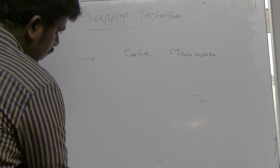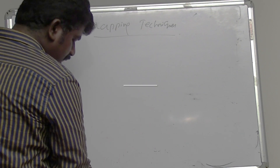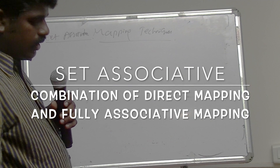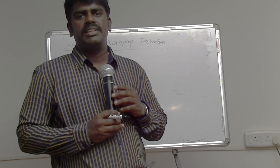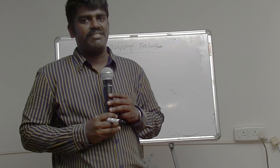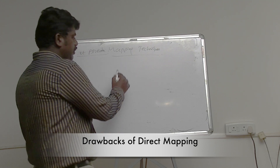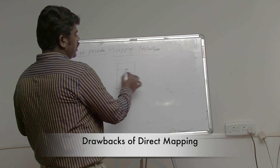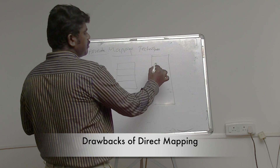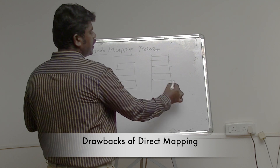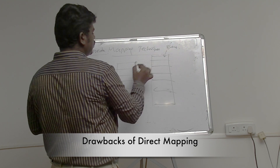Set associative mapping is the combination of both direct mapping and associative mapping. In direct mapping, the cache is divided into n number of cache lines and the main memory is divided into n number of blocks. The memory unit is called a block and the cache unit is called a line.